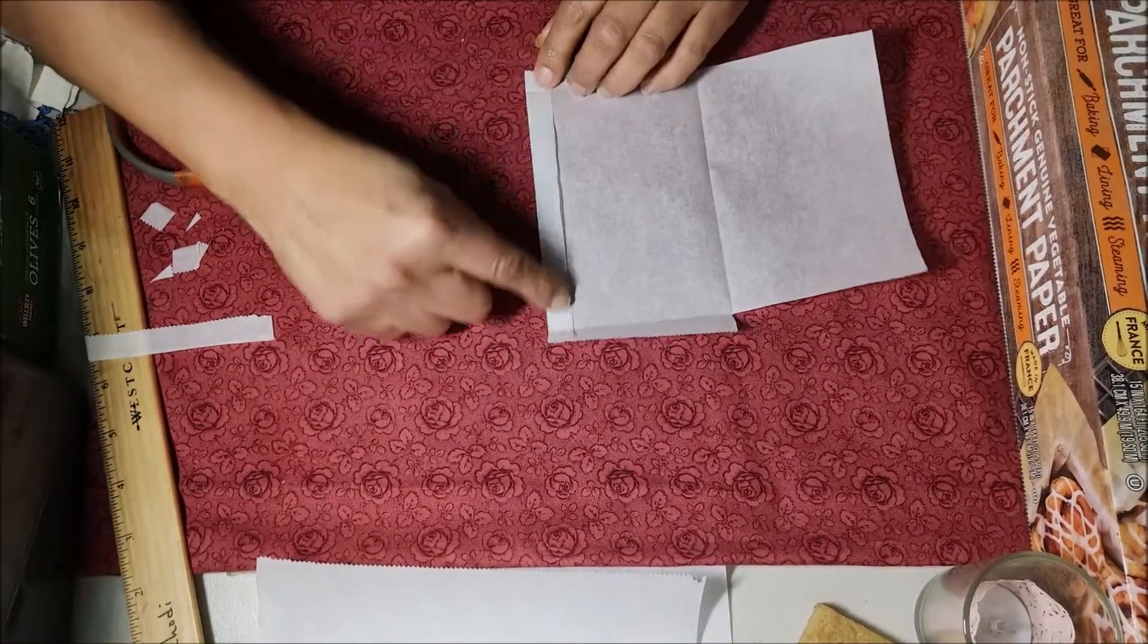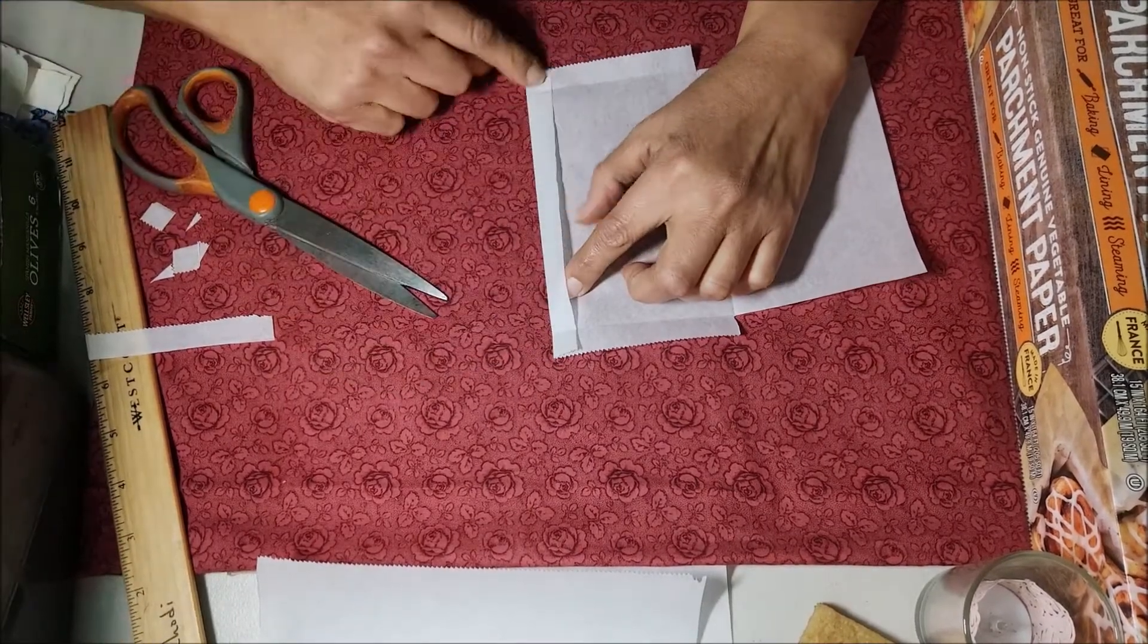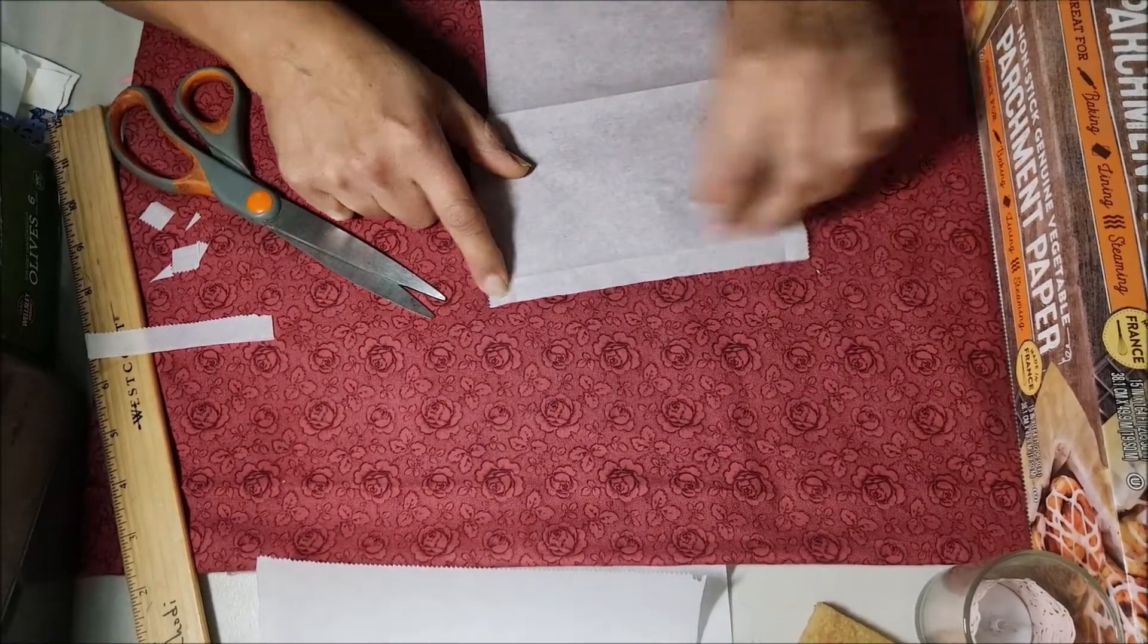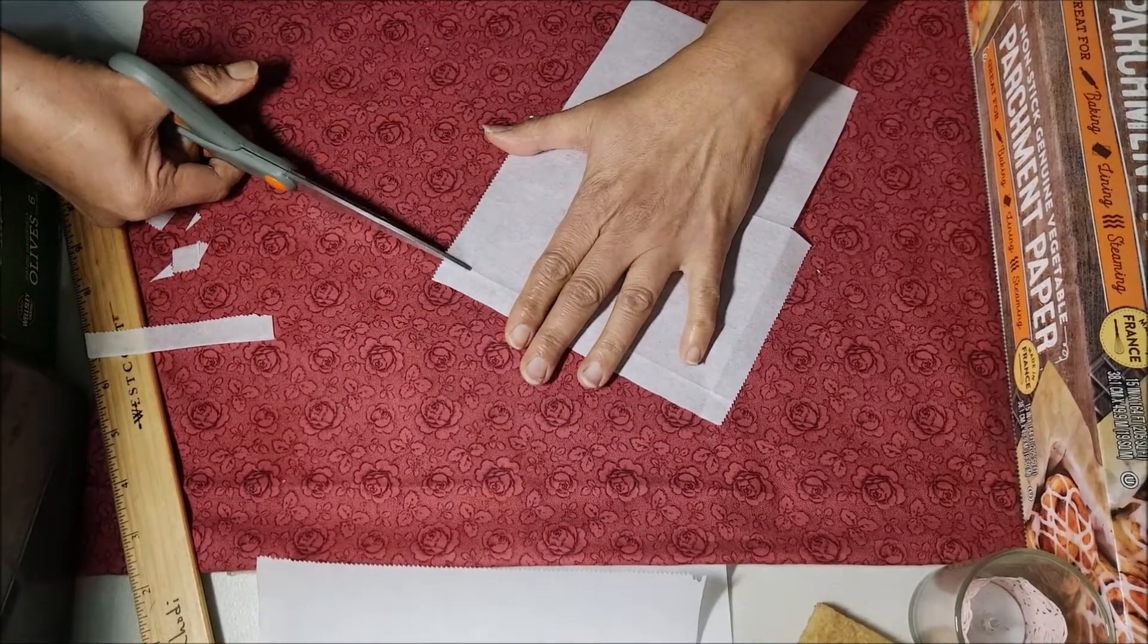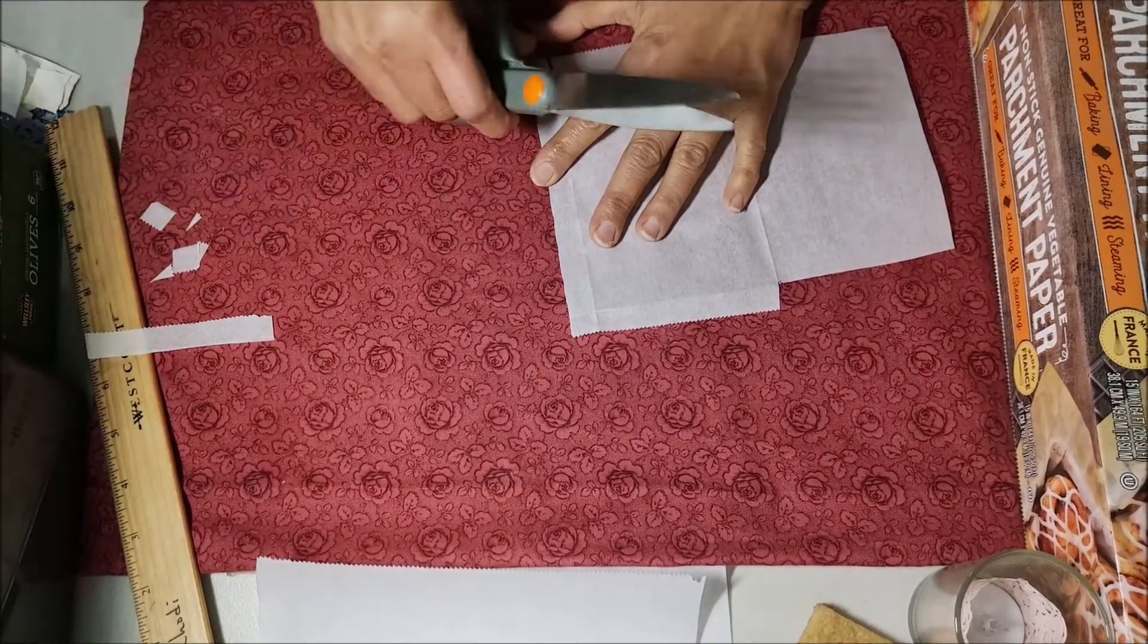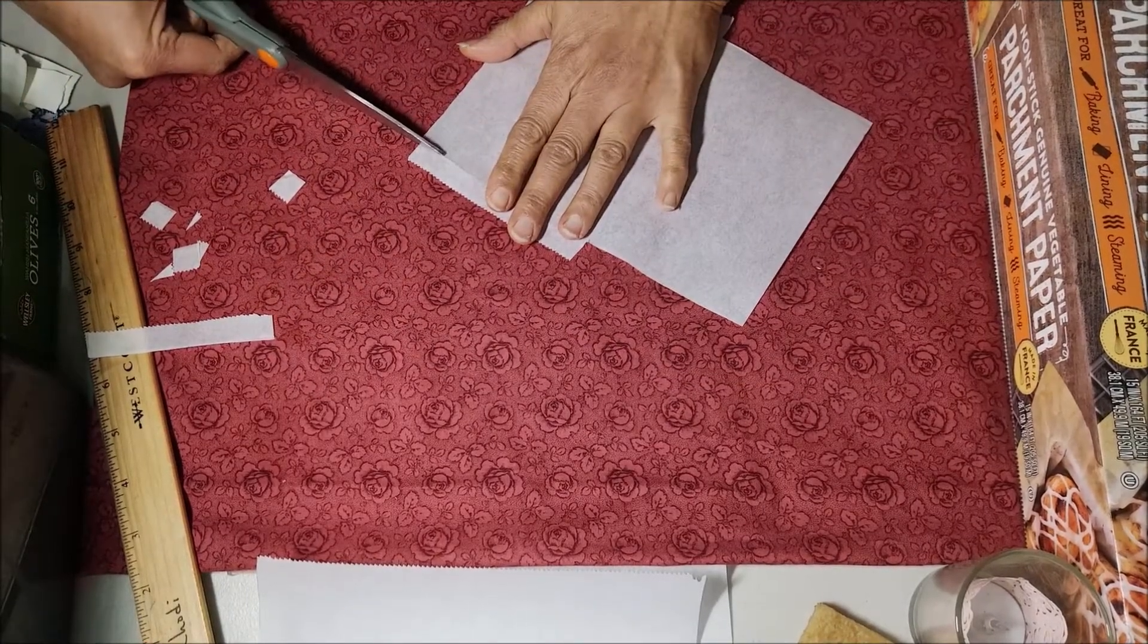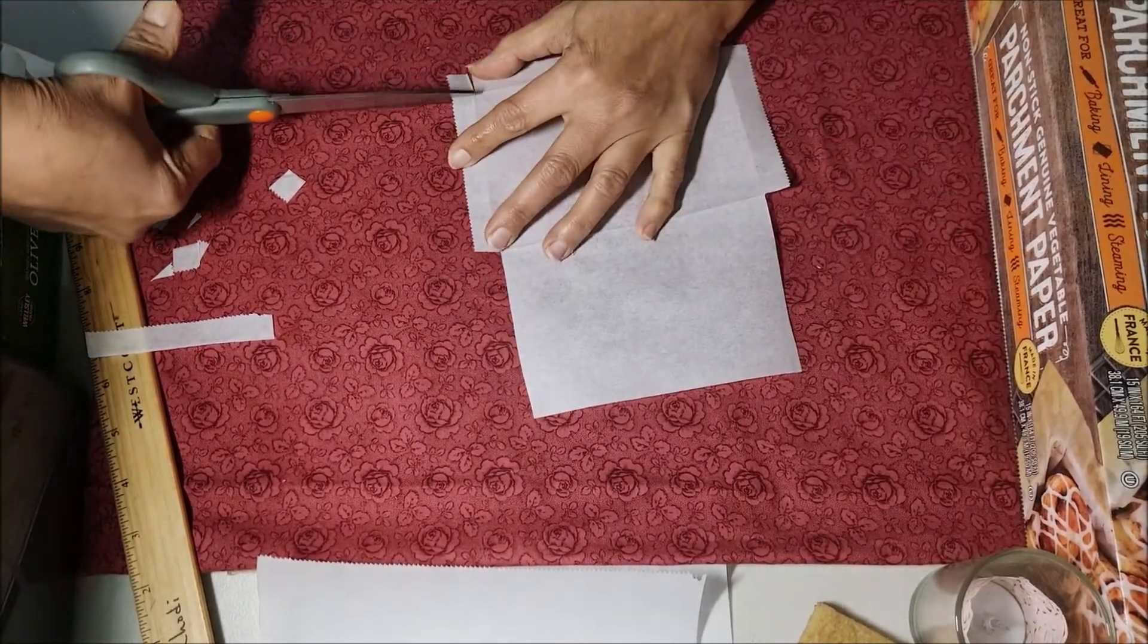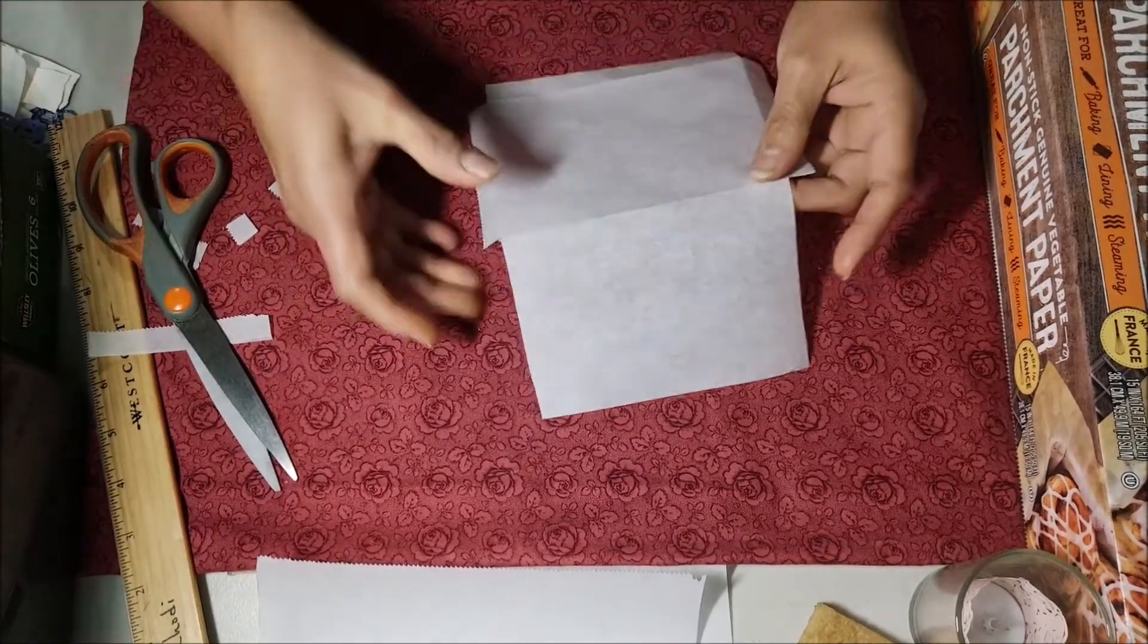We are also going to cut on the right side the little square where the two folds meet, okay? This little square and this little square we are going to cut. Very well.